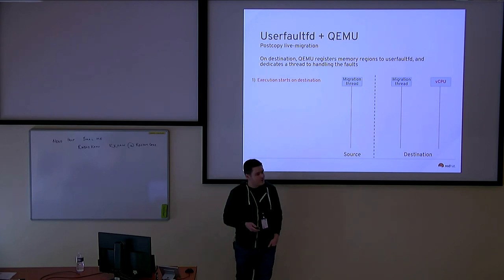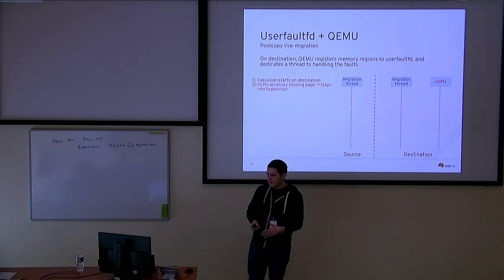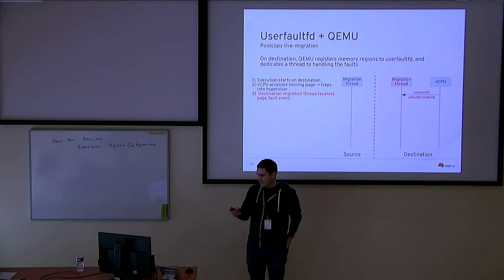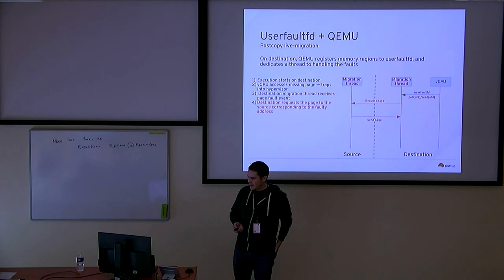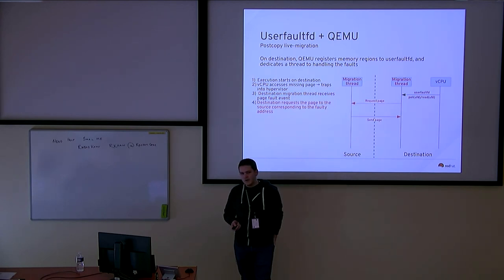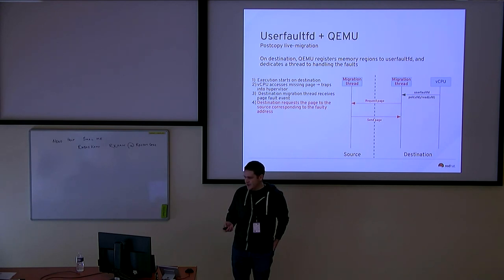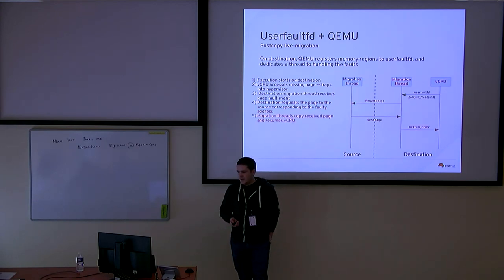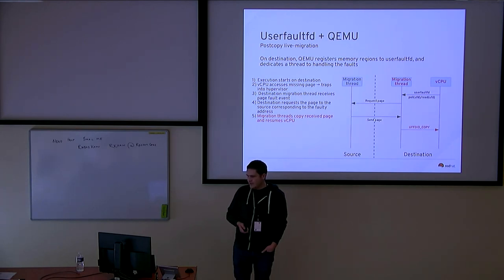Let's see how post-copy works in detail. The vCPU is started on the destination and starts to execute. At some point it tries to access a missing page, so we trap into the hypervisor. The hypervisor notifies the migration thread through a poll-in. The migration thread can read the missing page address and request the corresponding page from the source. When the page is received, it copies it into guest memory and resumes execution of the vCPU.